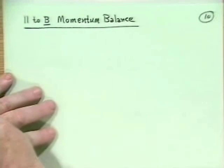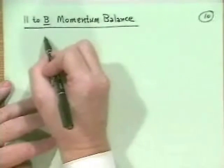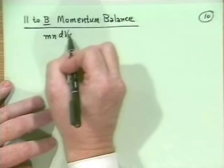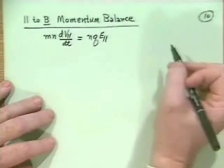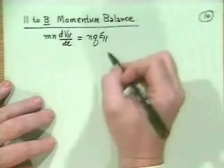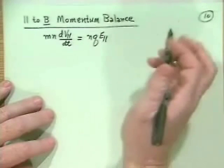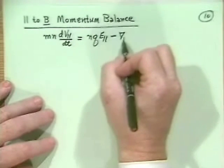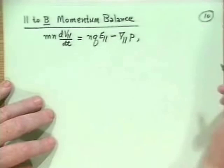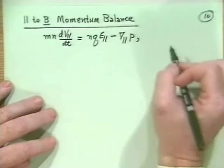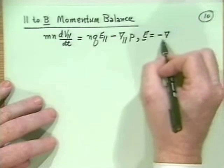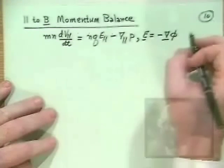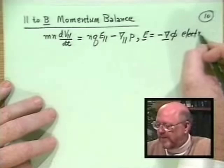If we didn't have a magnetic field, this is also what would happen. The parallel momentum balance is: MN dV_parallel/dt equals NQ E_parallel, and then there would be a B dot (V cross B) term, but the Lorentz force has no parallel component. So we have only minus del_parallel P. We often find it simplest to consider cases where the electric field equals minus the gradient of a potential — namely electrostatics.